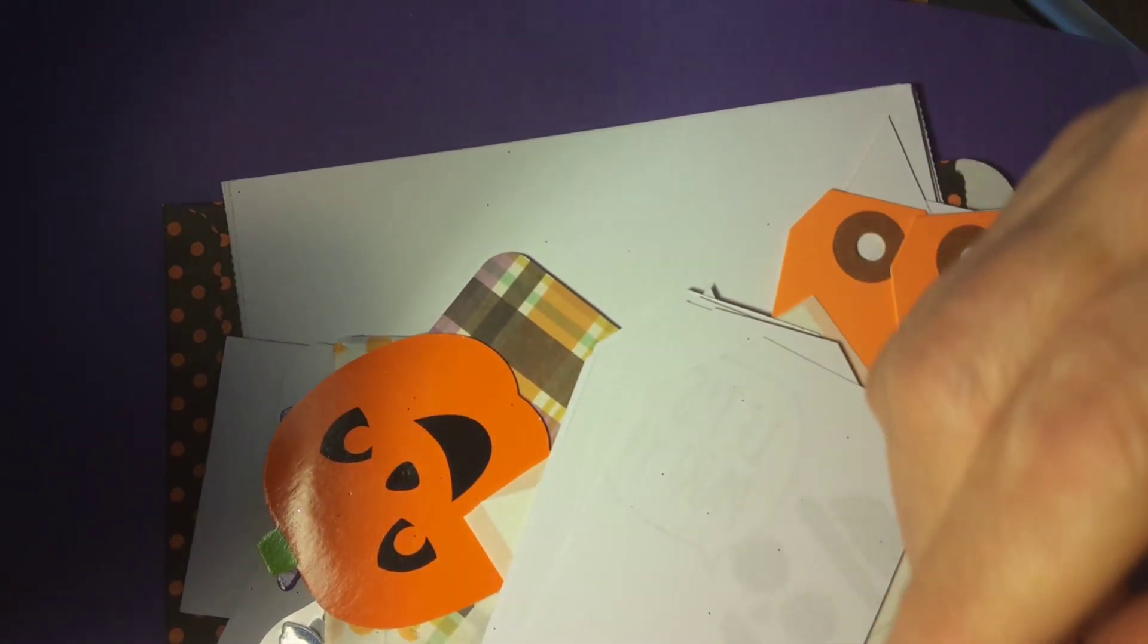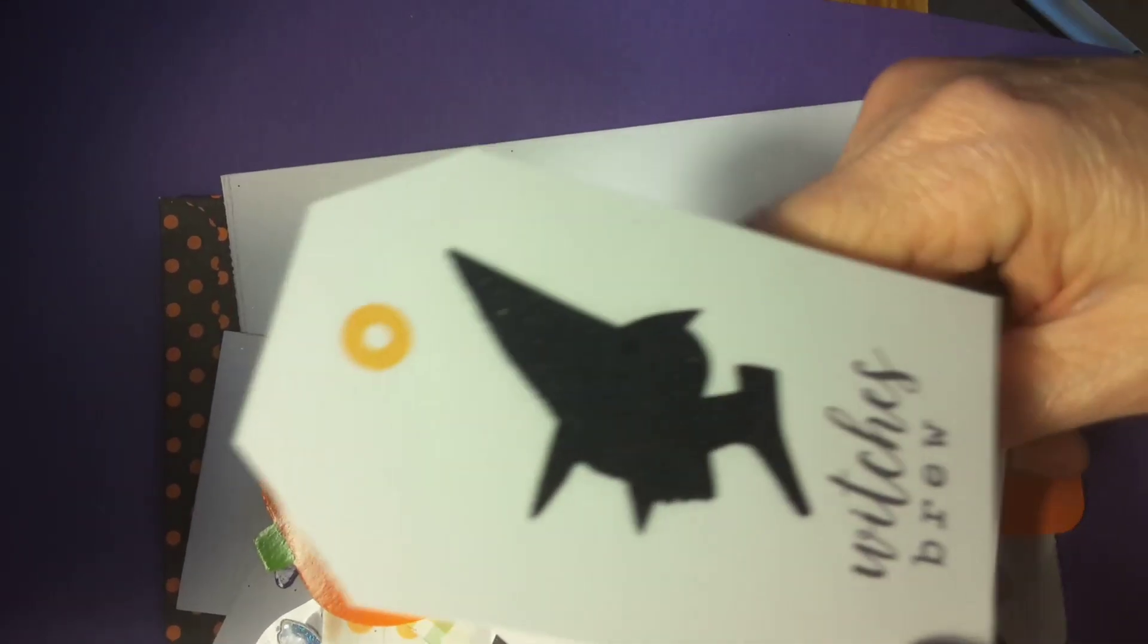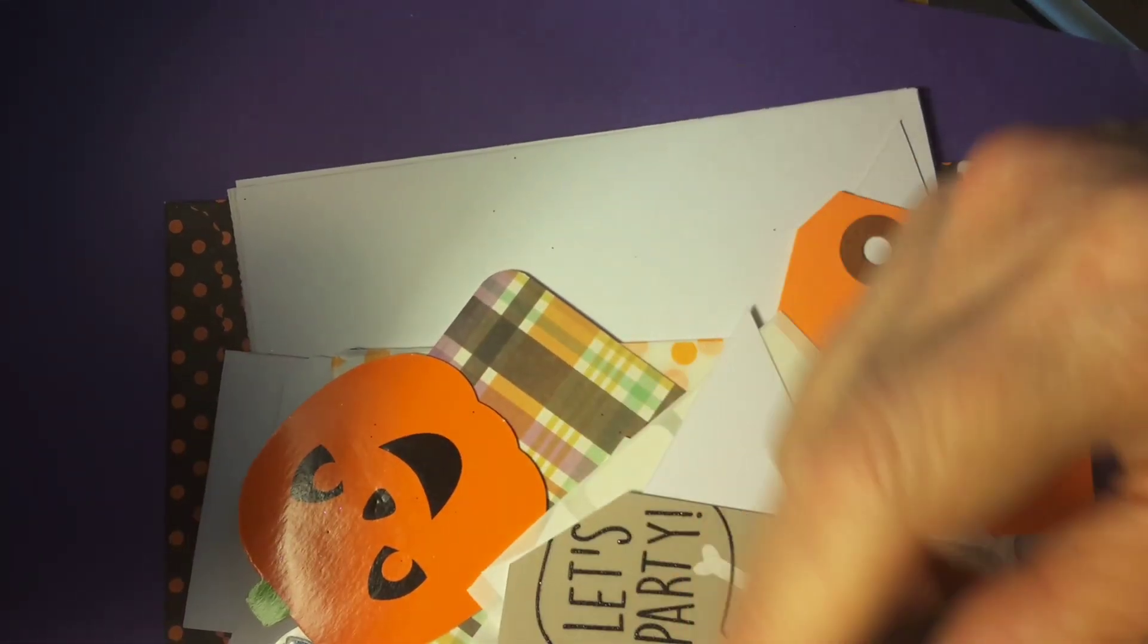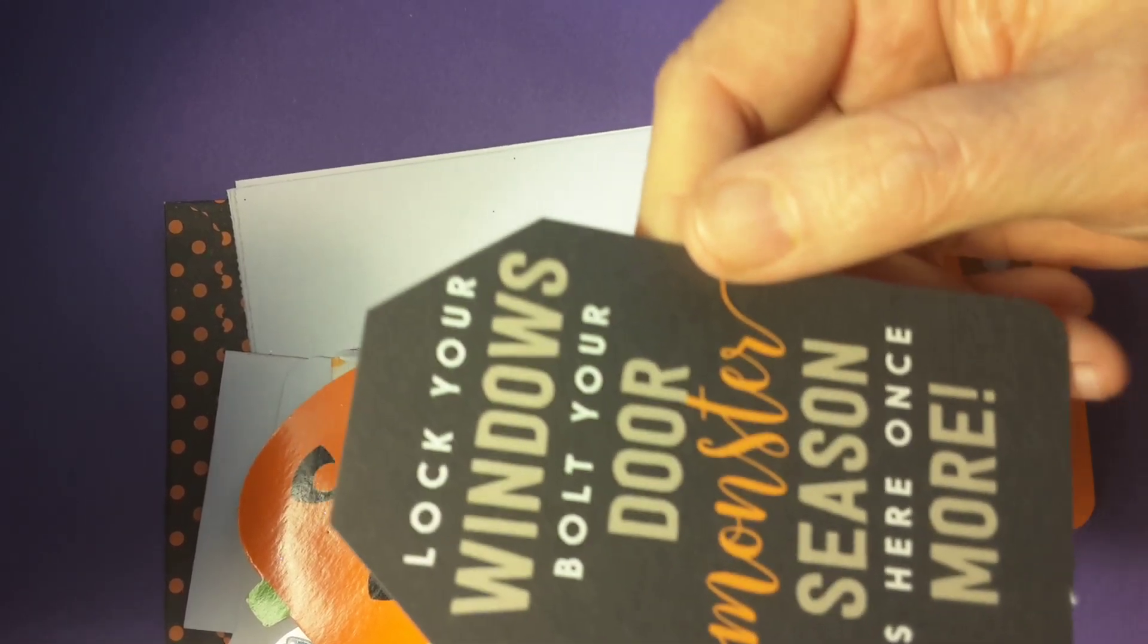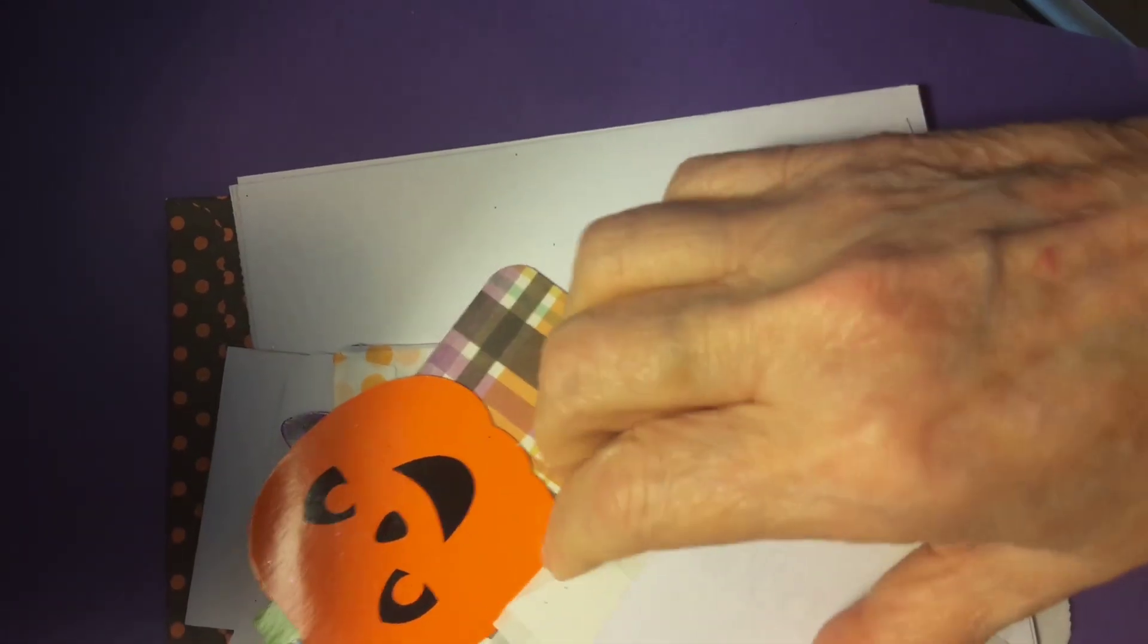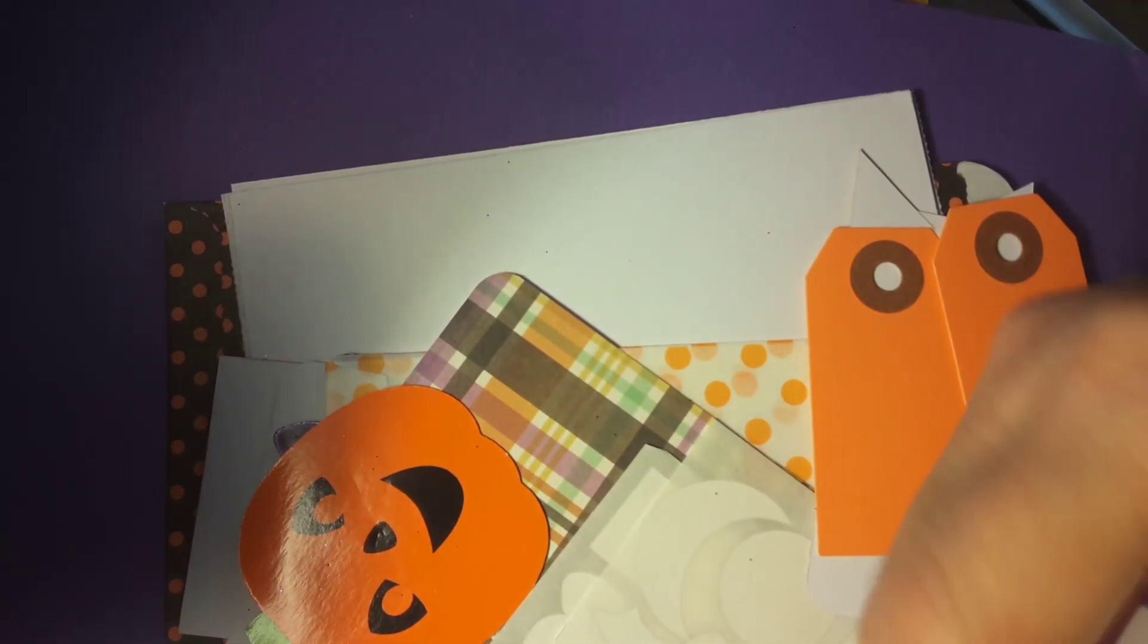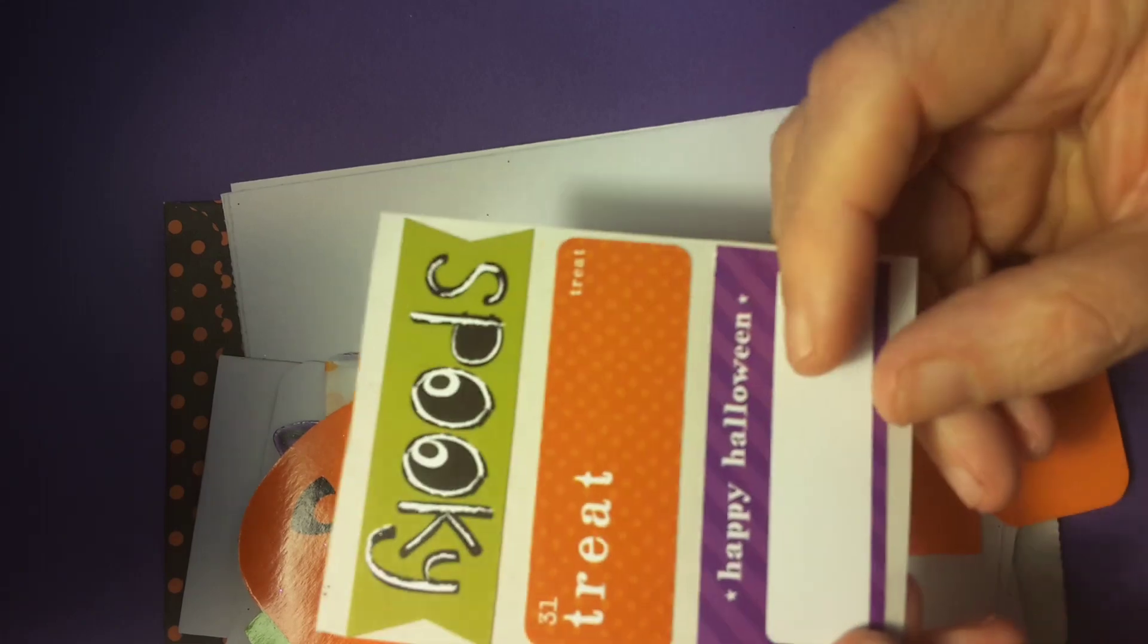Bats and cats. Here's another one of the Witch's Brew. I like that little witch on there. I put a spell on you. It says boo. Lock your windows, bolt your door, monster season is here once more. That's cute. Let's party. Spooky Boo. This little sticker says spooky, treat, and happy Halloween.